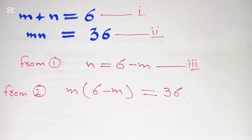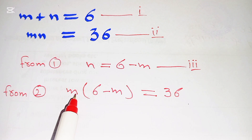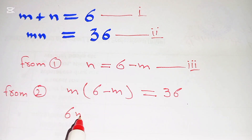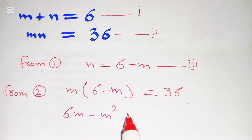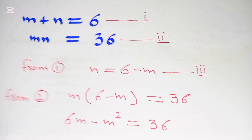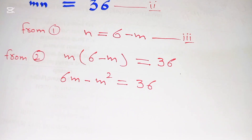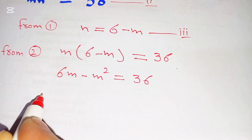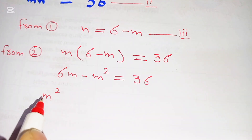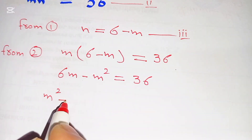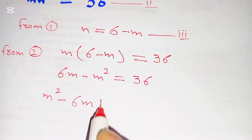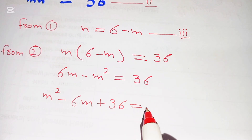From equation 2, we substitute the value of n, which is 6 minus m, giving us m times (6 minus m) equals 36. Expanding: 6m minus m squared equals 36, so m squared minus 6m plus 36 equals 0.